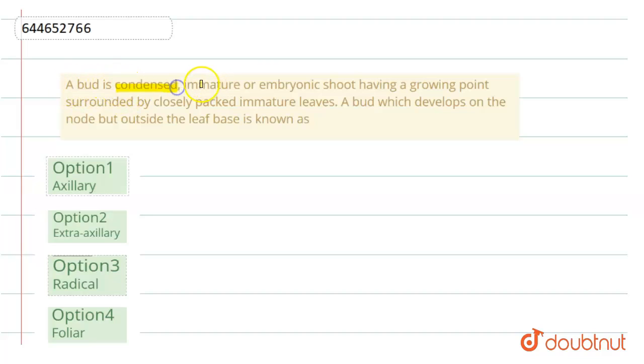a condensed, immature or embryonic shoot having a growing point surrounded by closely packed immature leaves. A bud which develops on the node but outside the leaf base is known as - let's see the answer.